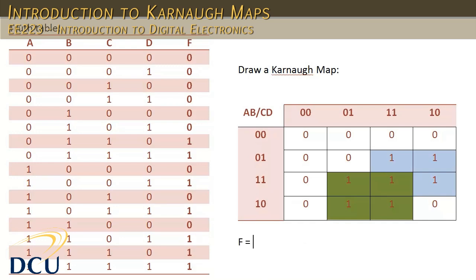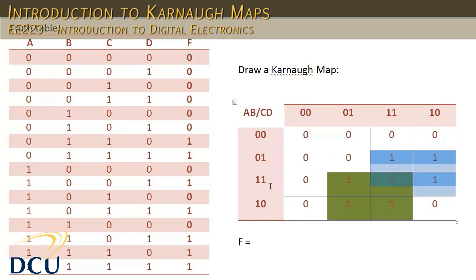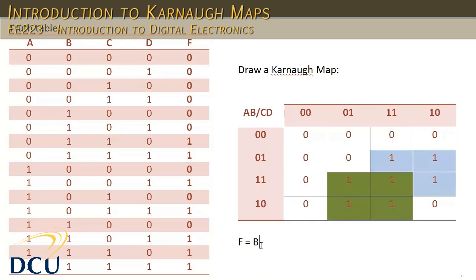Our final expression F now equals the sum of products. Looking at the blue grouping — these four cells together — we look for what has not changed along the rows and the columns. Along the AB column, A is present in both its inverted and non-inverted case, but B is only present in its positive or non-inverted case. So B is part of one of our products. Looking at the row for the same blue grouping, C is present in its non-inverted case in both columns, but D changes — so we don't include D. This means we've got BC, and that describes the blue grouping.